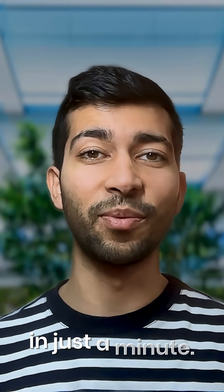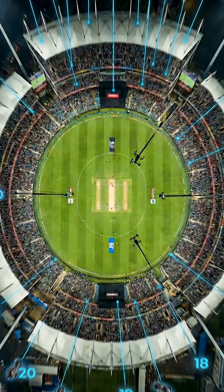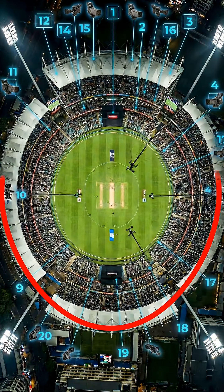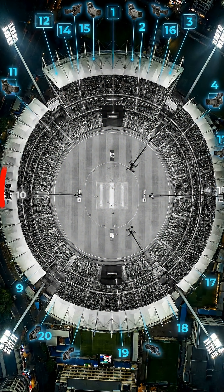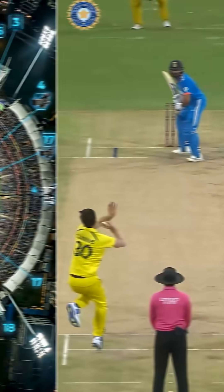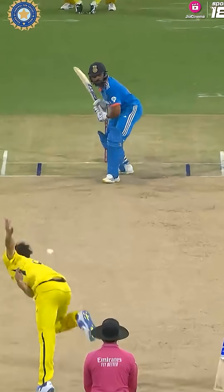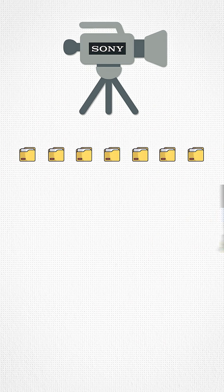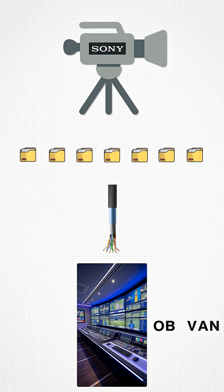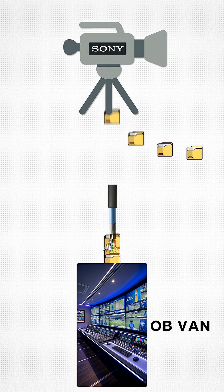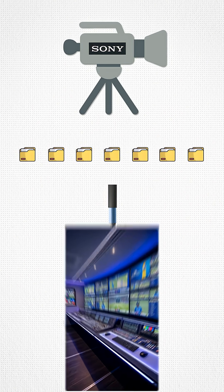So here's what happens in just a minute. Inside every cricket stadium, there are 25 to 35 cameras capturing every tiny movement. The instant the ball hits the bat, those cameras send huge raw files through fiber cables straight into something called an OB van.